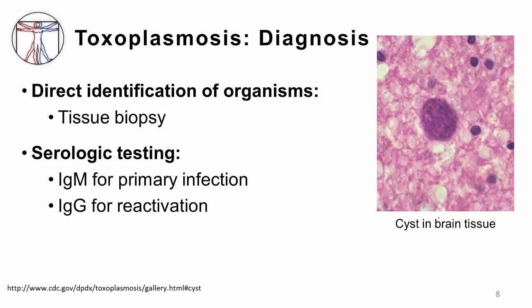Most commonly we do serological testing. For acute infection — like the normal host with fever and lymphadenopathy — we get IgM and IgG; my patient had a positive IgM and negative IgG, suggesting acute infection. For patients you're worried about reactivation, like a patient with HIV, you look for a positive IgG consistent with clinical disease. If someone presents with brain lesions and a negative IgG, it may suggest those lesions are not due to toxoplasmosis.